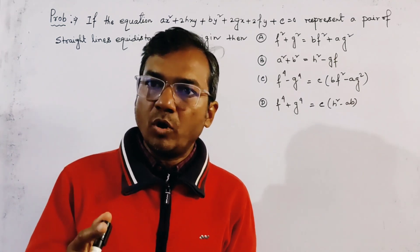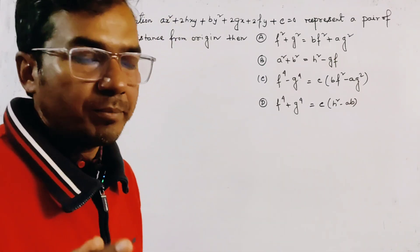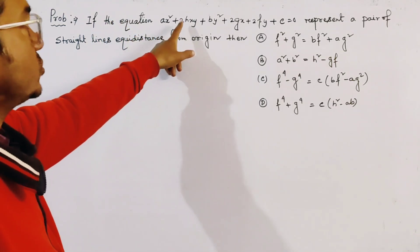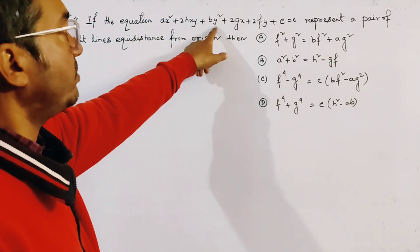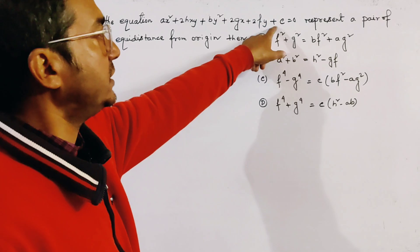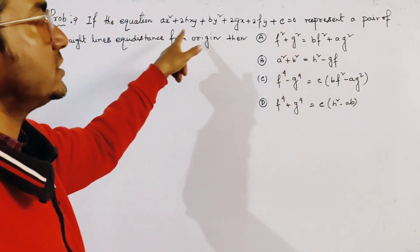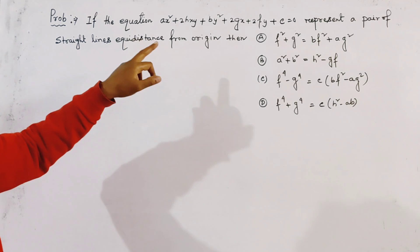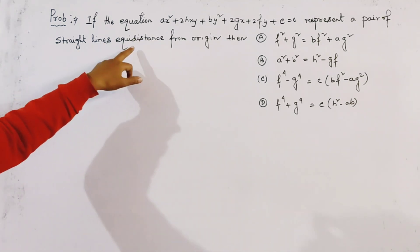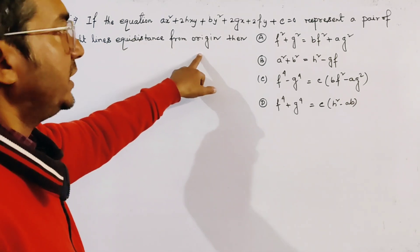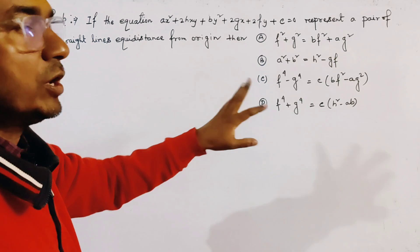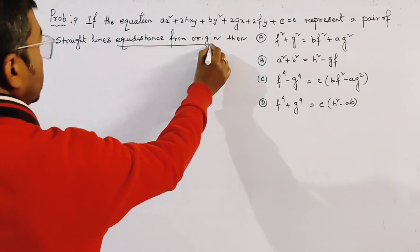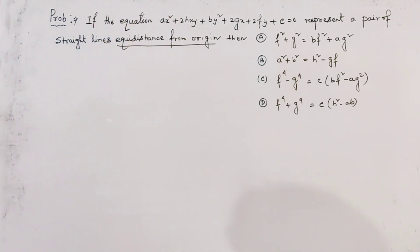This problem is from pair of straight lines. The general equation of second degree is: Ax squared plus 2Hxy plus By squared plus 2Gx plus 2Fy plus C equals 0. It is given that this equation represents a pair of straight lines that are equidistant from the origin. We have to find out the correct result.